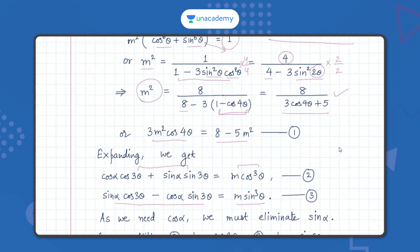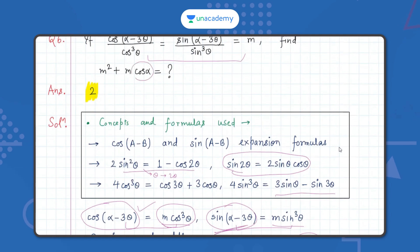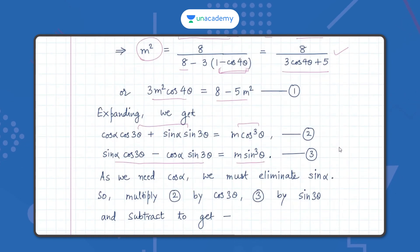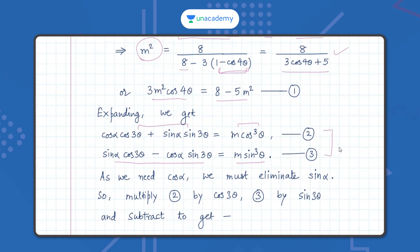Now comes the most important and trickiest part of the entire question. Since the question requires cosα, we are going to eliminate sinα from equations 2 and 3. Think of it as two linear equations in two variables — sinα and cosα. If you think of it that way, the question becomes very easy. We just need to eliminate sinα and find the value of cosα.